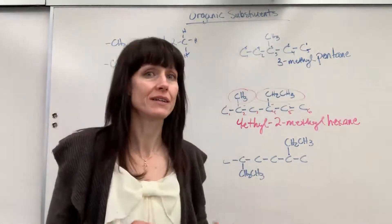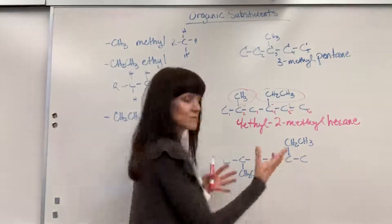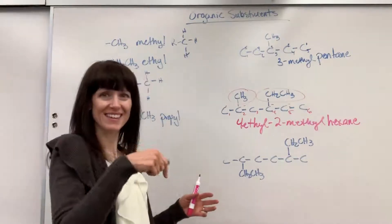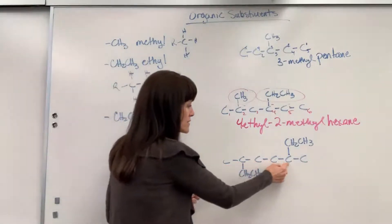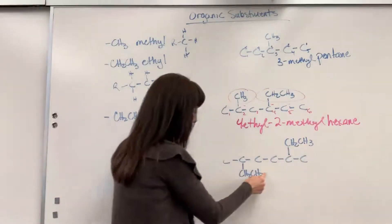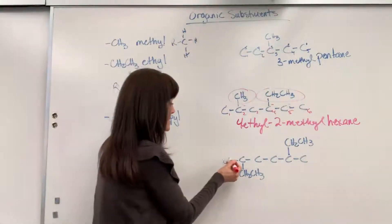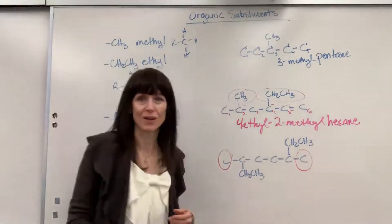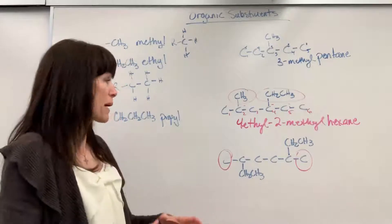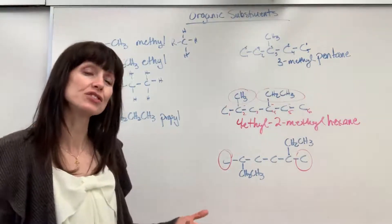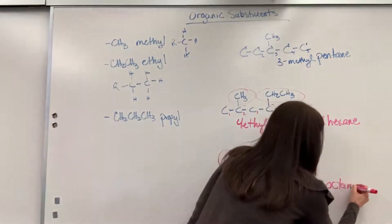For the third example, I'm counting to find the longest carbon chain. The straight chain gives six. But look — I can see the longest one is bent. One, two, three, four, five, six, seven, eight — that is the longest carbon chain. Eight carbons is 'oct,' all single bonded, so this is going to be octane.